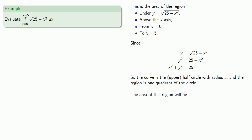And that means the area of this region will be 25 pi over 4.